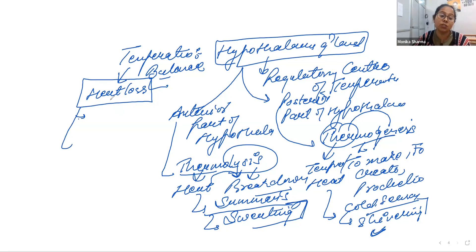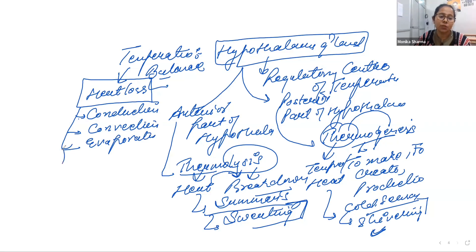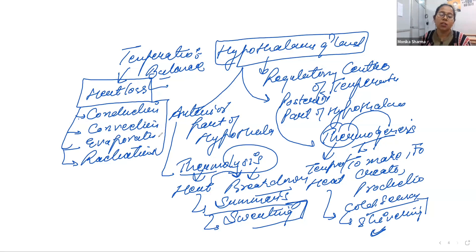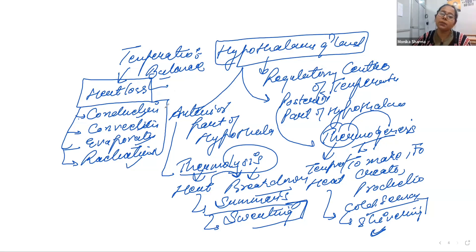The various methods of heat loss are: conduction, convection, evaporation, and radiation. These are the methods through which a person maintains heat balance — if there is excess heat inside the body, it can be lost through these processes. That's all for today's lecture. In the next lecture, we will continue with the percentage of heat loss through conduction, convection, evaporation, and radiation.